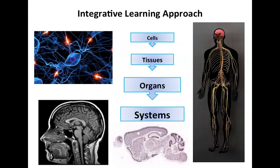We employ an integrated learning approach throughout this degree. The example I'm showing here is how you might study the nervous system. First we would understand how individual cells work — this is an individual brain cell. Then you look at the level of tissues, made up of collections of individual cells, then at the entire organs — here is the brain — and then finally at the whole body system. You really get an understanding of normal human physiology in health, how things work at all levels, and then also in disease — what goes wrong.